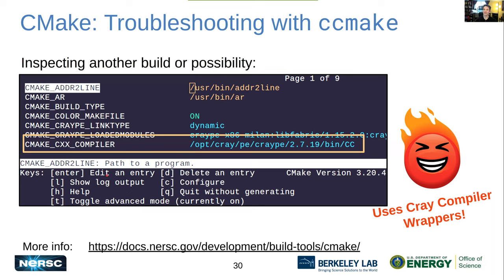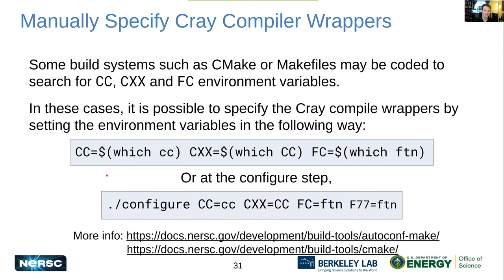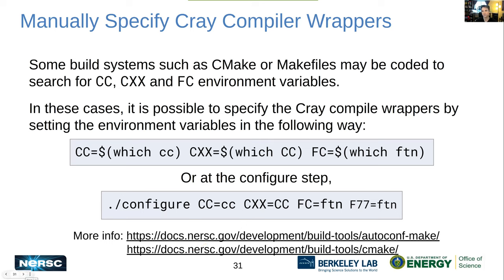To summarize the build system tips: the issues I pointed out are what we're trying to address with these techniques — trying the explicit wrapper variables in your configure step or CMake command. For more details, we have documentation on these topics that I still personally find helpful.